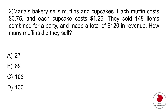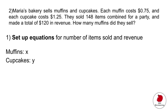You have to break it down into several steps. The first step is to set up your equations for the number of items sold and the revenue. If we say muffins are x and cupcakes are y, then x plus y equals 148, because they sold 148 items. That's our first equation.